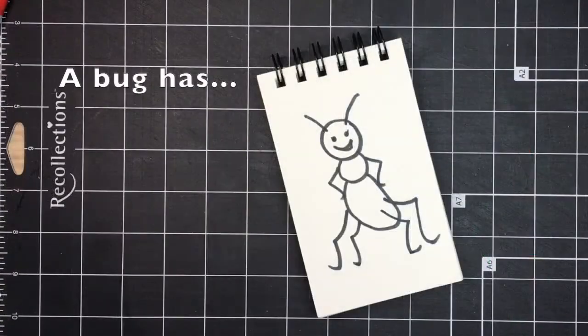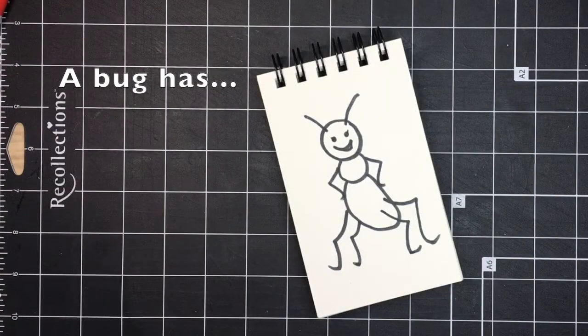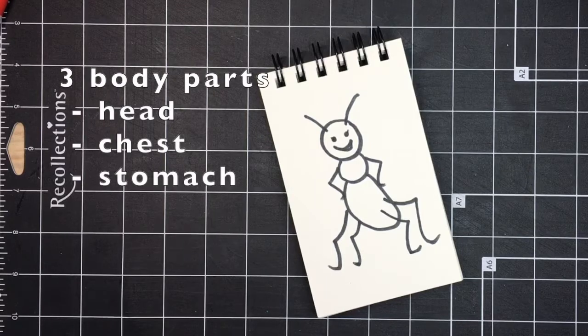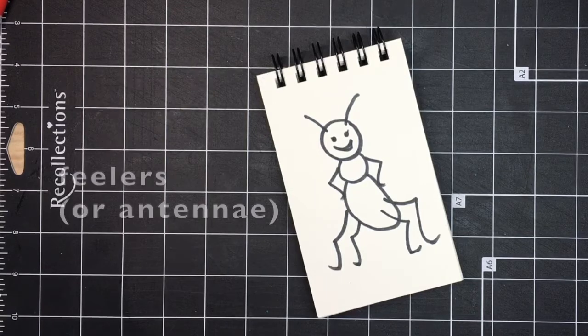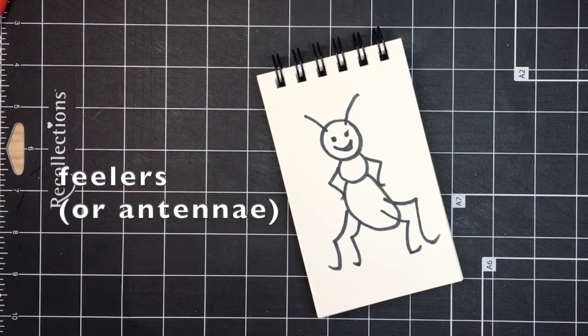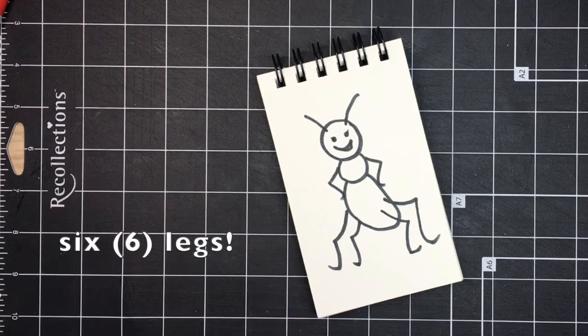So let's review what we've learned. A bug has three body parts: head, chest, and stomach. Feelers, or antenna, and six legs.